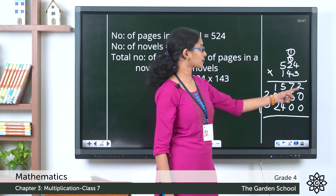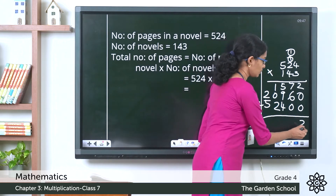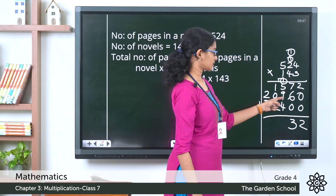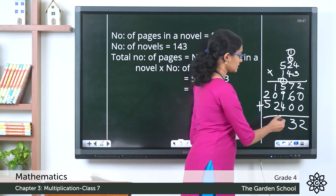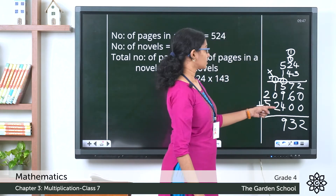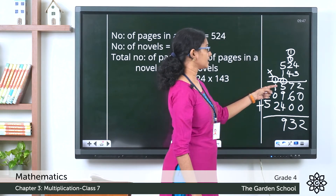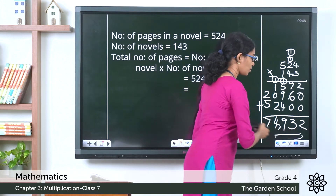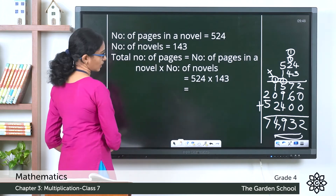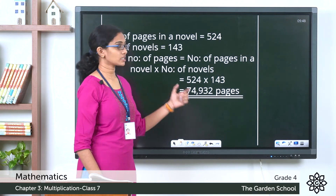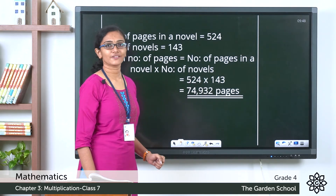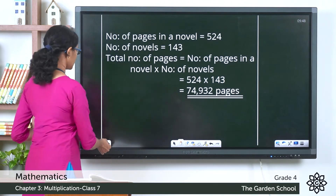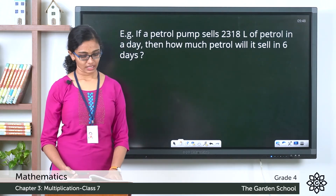Now let's add the three partial products together to get the final product: 2 + 0 + 0 = 2; 7 + 6 + 0 = 13, carry over 1; 9 + 4 = 13 + 5 = 18, plus 1 = 19, carry over; and continuing across. The final product is 74,932. So the total number of pages in all 143 novels is 74,932 pages.